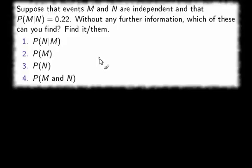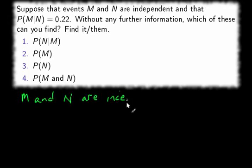Now, without any other information, all we have to go on is that the two events are independent. And what that should tell you immediately is that M and N are independent.